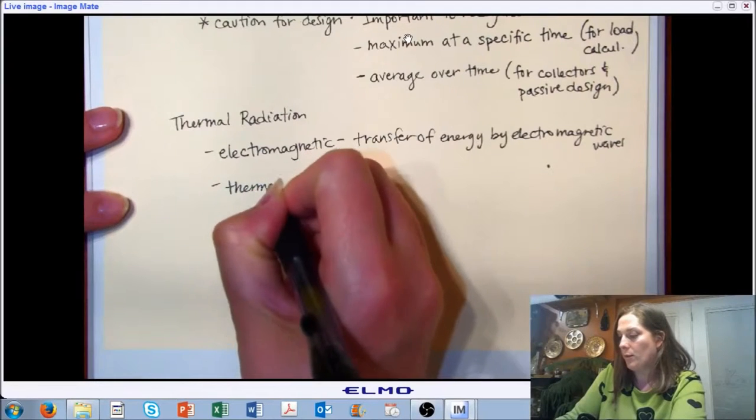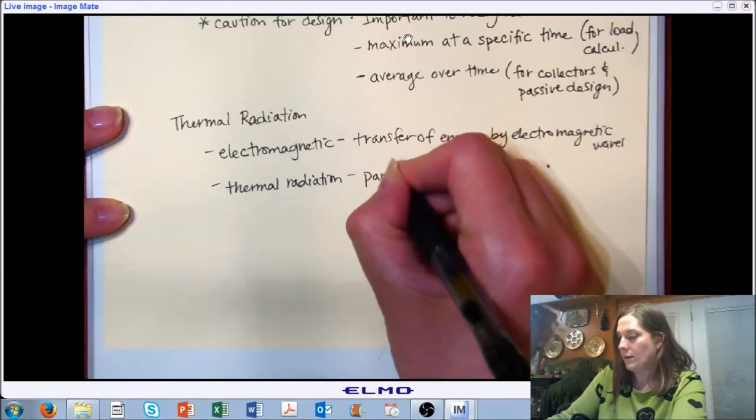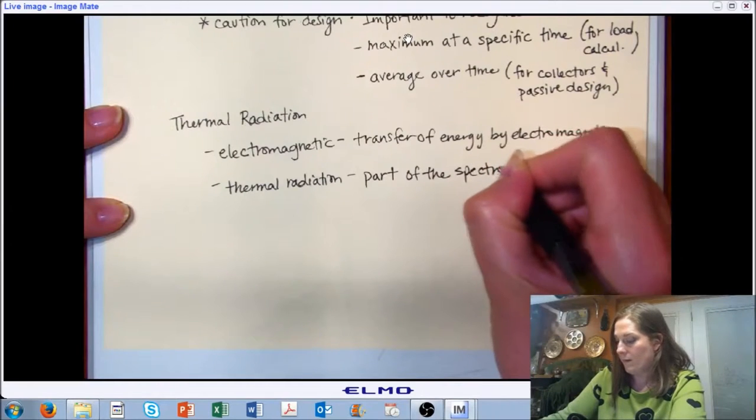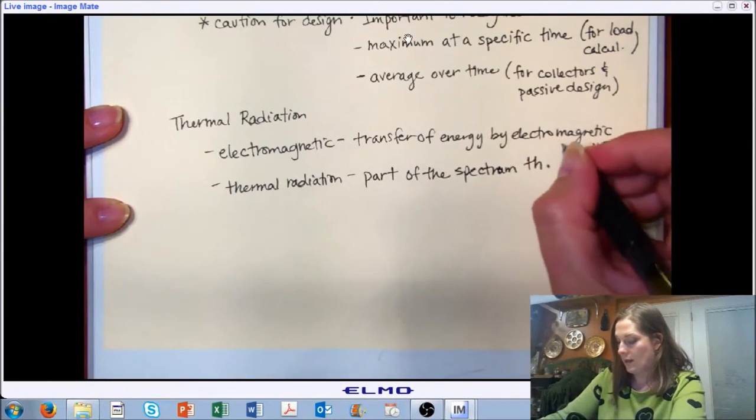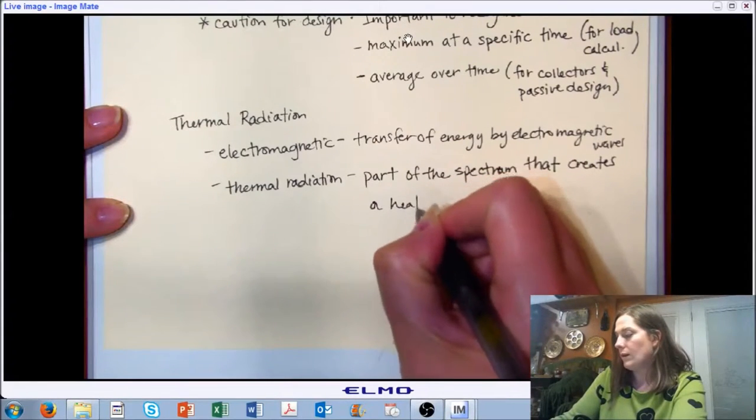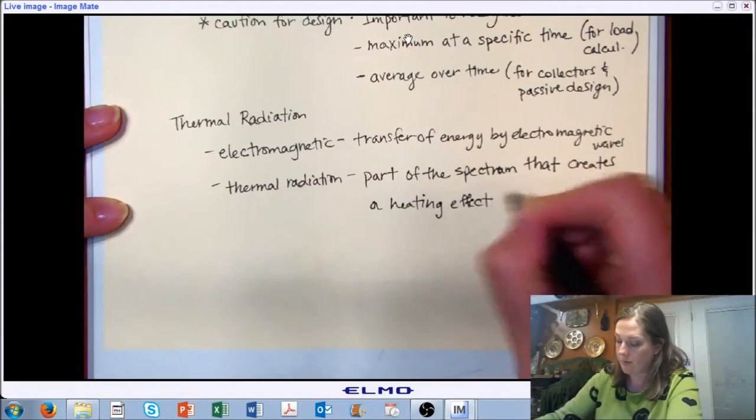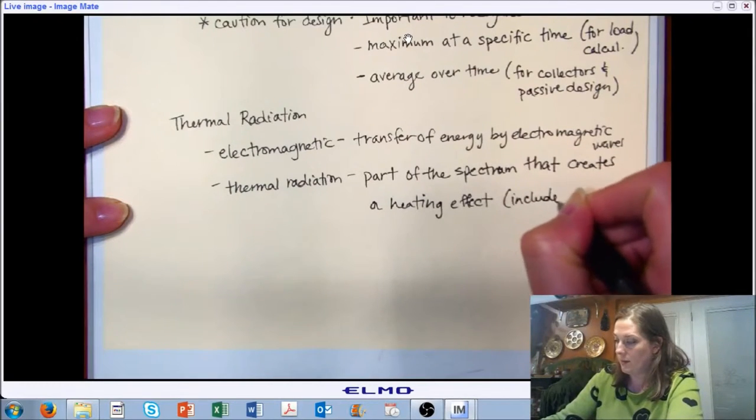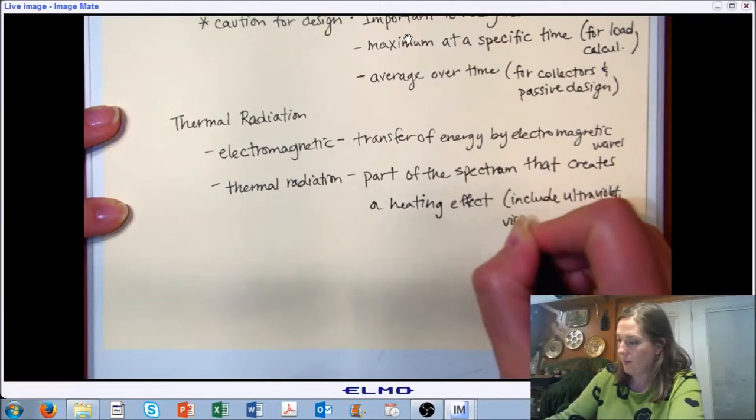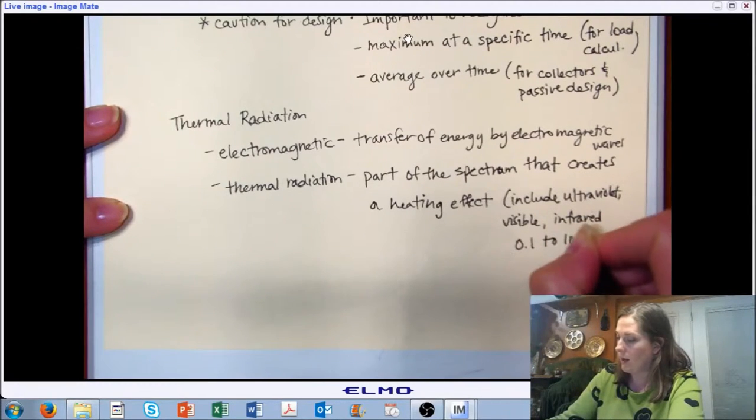When we're talking about thermal radiation, we're looking at wavelengths that result in a heating effect. We're talking about radiation that results in a change in temperature of the surface that it's impacting. This is going to include ultraviolet, visible and infrared, going from 0.1 to 100 microns.